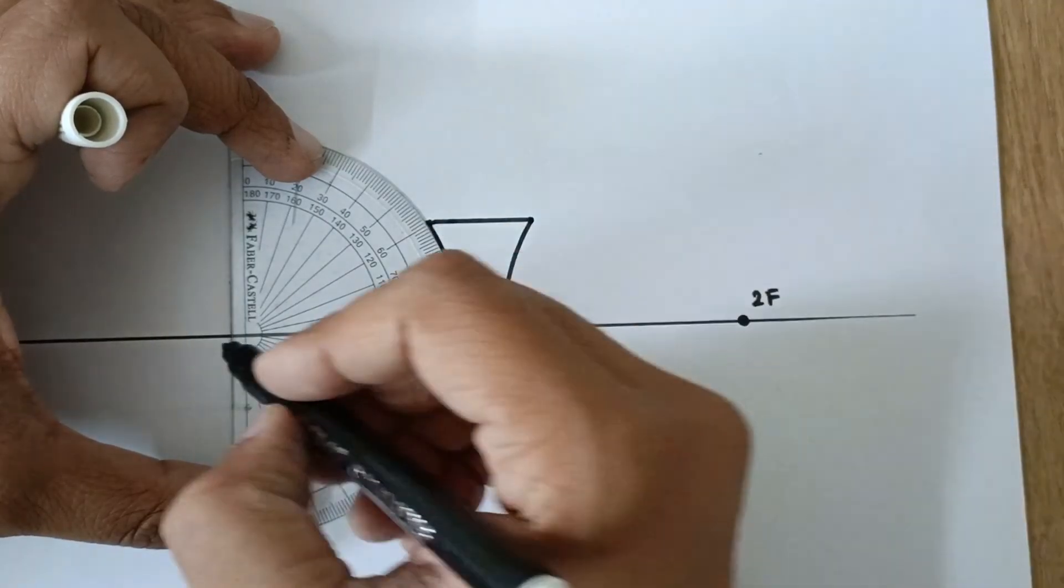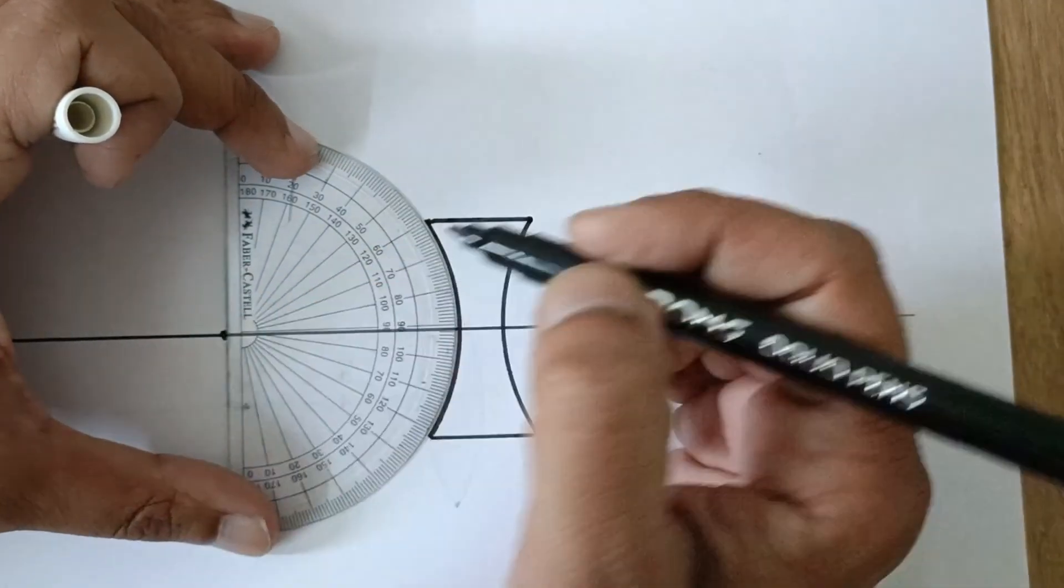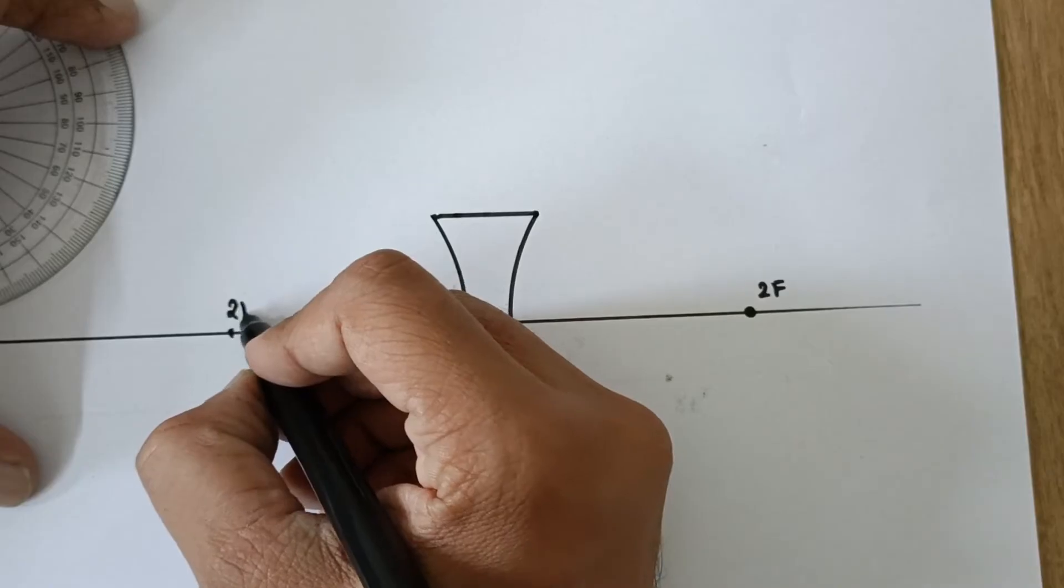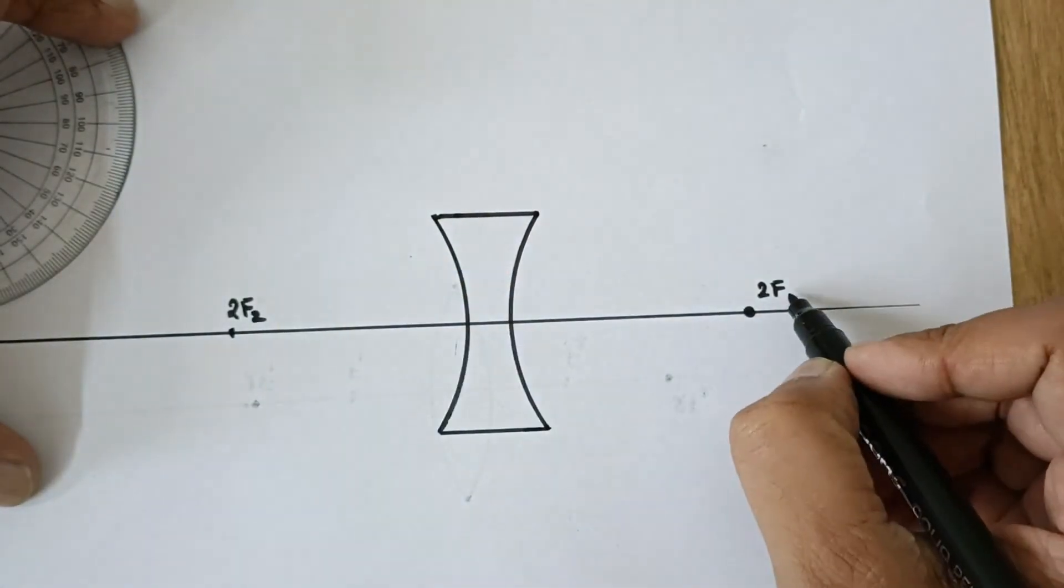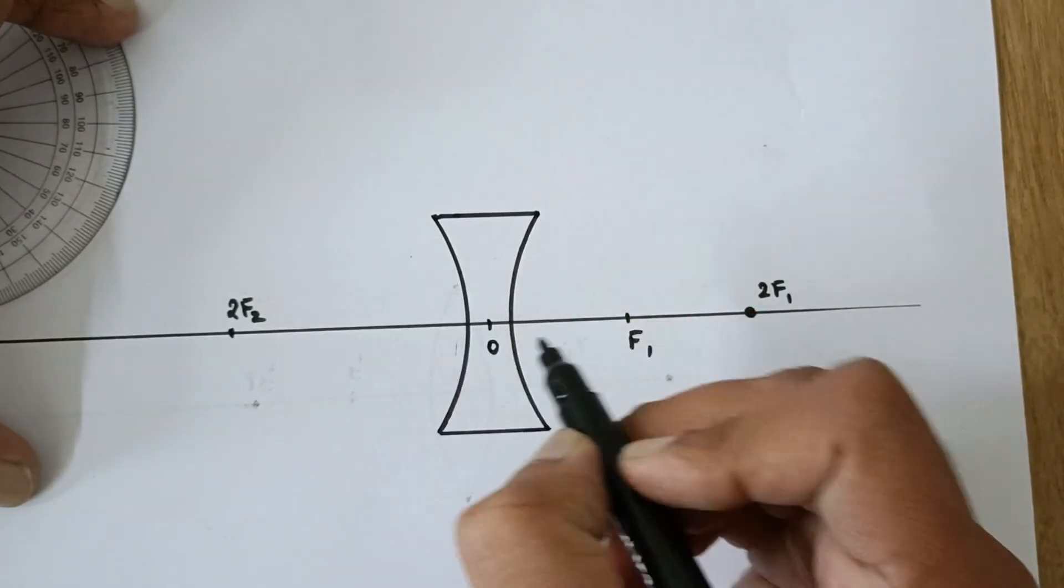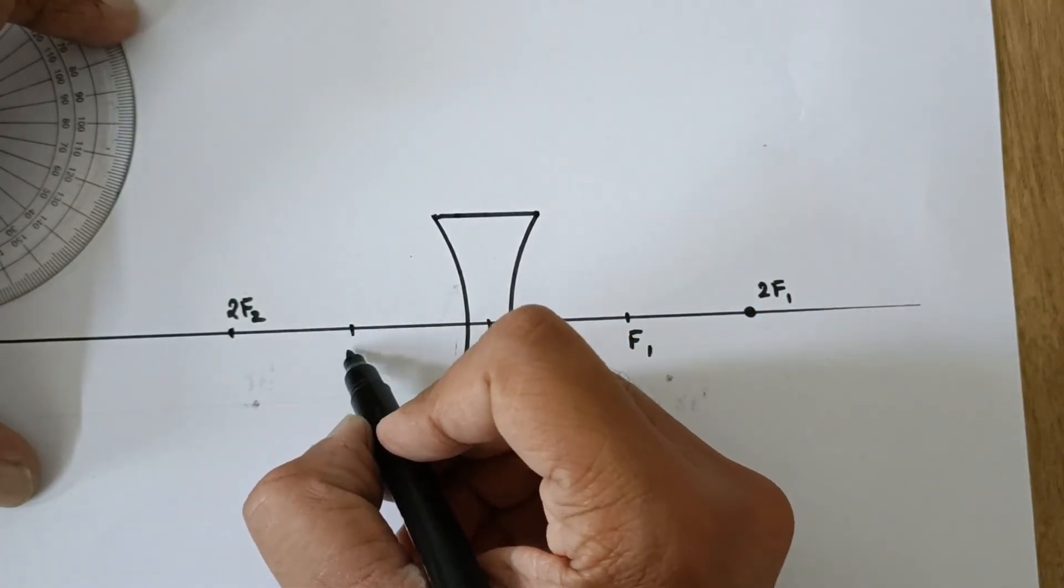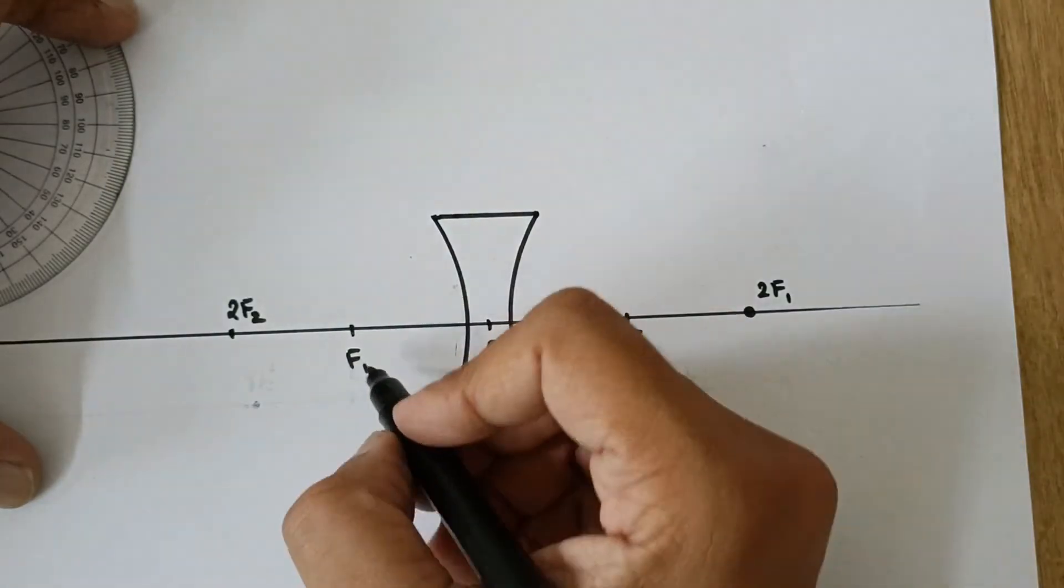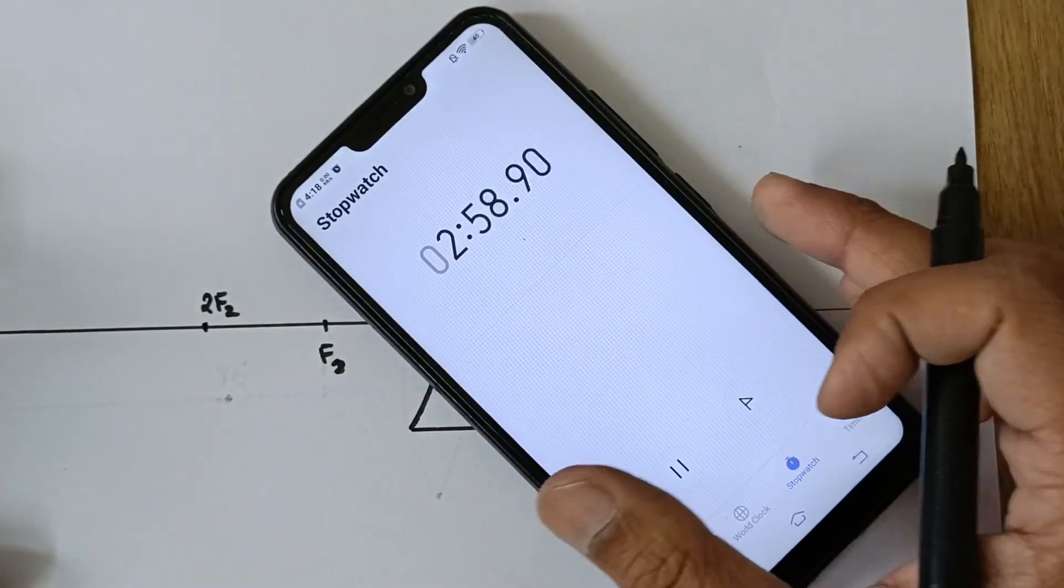Yes, I should mark this point as 2F. Now actually this is 2F2, this is 2F1, midpoint F1, midpoint O, midpoint again F2. I am done within less than 3 minutes.